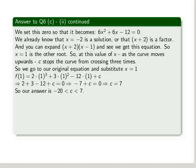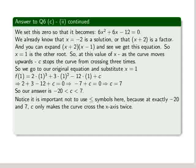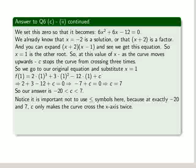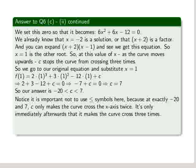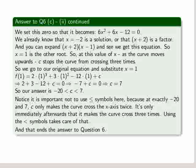So our total answer for this section is that c is greater than minus 20 and less than 7 if we want the curve to have three distinct real roots, or if we want the curve to cross the x-axis three times. Notice it is important not to use the less than or equal symbols here, because at exactly minus 20 and 7, c only makes the curve cross the x-axis twice. It's only immediately after these points that it makes the curve cross three times. Using the less than symbols takes care of that. So that ends our answer to question 6. Thanks.